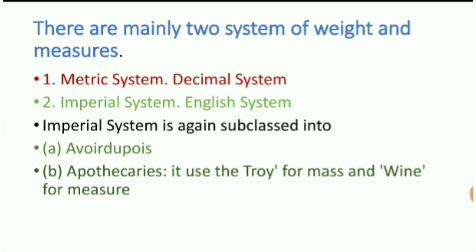The imperial system is further divided into two parts: the avoirdupois system and the apothecary system. In the olden days, the imperial system was used by old physicians who wrote their prescriptions in this manner. It used the troy system for mass and wine for measures.